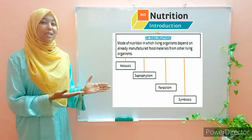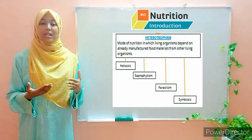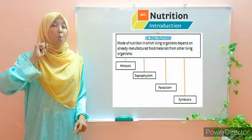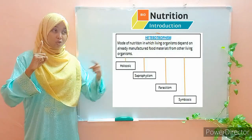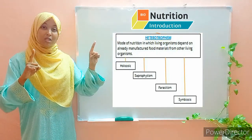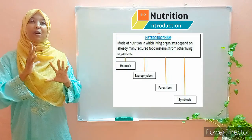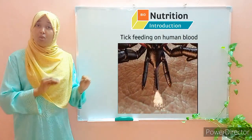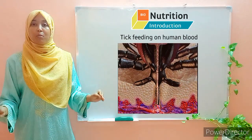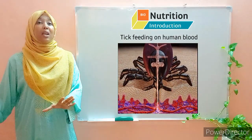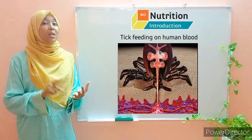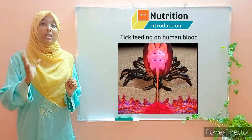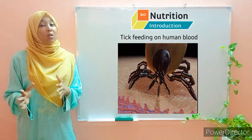Moving on to parasitism — a mode of nutrition whereby one organism, the parasite, obtains nutrients from another organism, the host. This is a disadvantageous relationship for the host because it gets nothing from it — the one benefiting is the parasite, which obtains nutrients and in most cases shelter. An example of a parasitic relationship is that of the tick and cattle, where the tick is the parasite and the cattle is the host. Another example is tapeworms, which are found in the intestines of mammals like human beings.